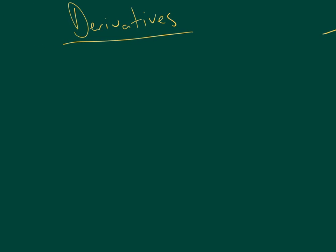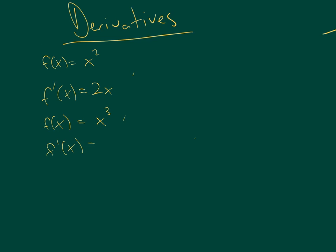Suppose you have a function f of x equals x squared. Then the derivative of that would be f prime of x equals 2x. Suppose you have a function f of x equals x cubed. Then the derivative of that would be 3x squared.